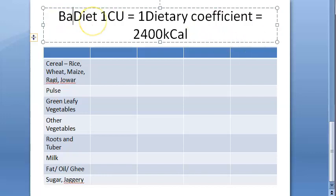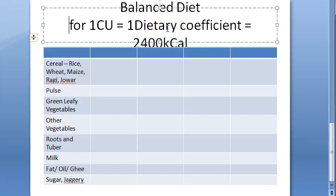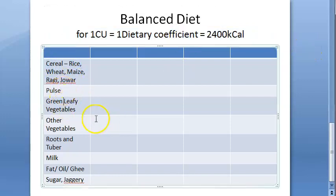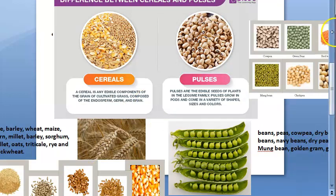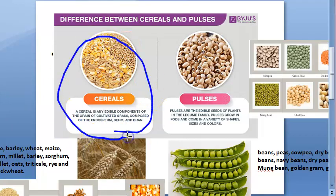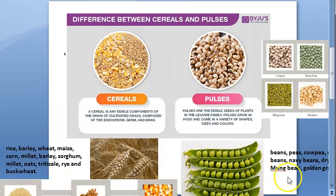This is the balanced diet for one consumption unit. Before that, you should understand what cereals are, what pulses are, and what green leafy vegetables are. Cereals include rice, ragi, wheat, and maize — these are all staple diet. A cereal is grown as part of the grass stock, as you can see in the photo.